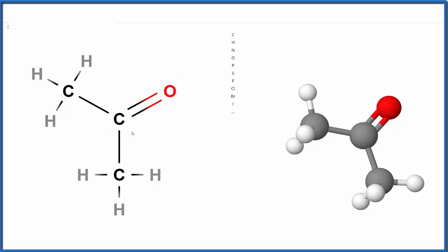So acetone is a polar molecule. Let's see what that looks like. So we have our acetone molecule here. You can see the red, that's our double bonded oxygen.